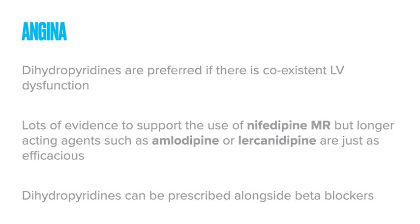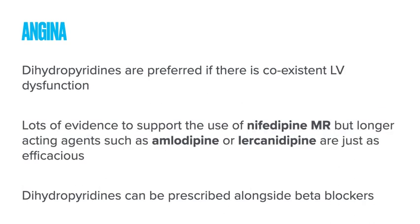Dihydropyridines are preferred if there is co-existent left ventricular dysfunction, that is a reduced left ventricular ejection fraction. If you are going to use a dihydropyridine there's a lot of evidence supporting modified release nifedipine, but longer-acting agents such as amlodipine and lacidipine are just as efficacious, and if I'm going to choose one that's generally where I go.